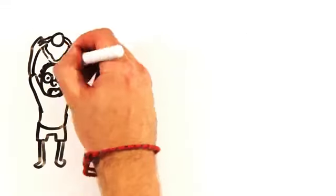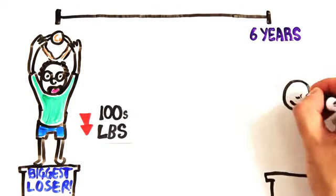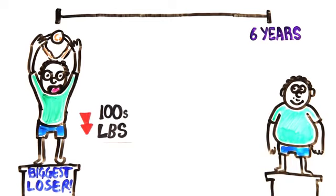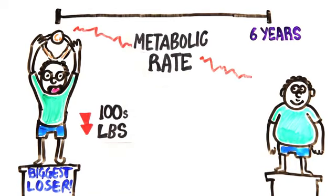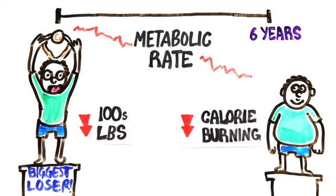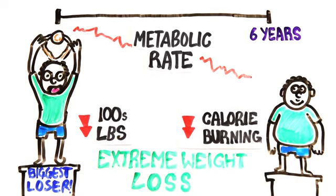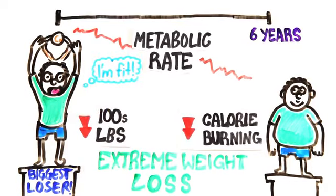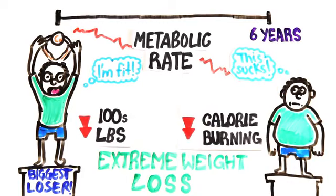After following contestants from the show The Biggest Loser for six years, some of which who had lost hundreds of pounds in those seven months, scientists noticed something interesting. Not only did most of the participants in the study regain their weight, but their metabolic rates changed. One man in particular now burns 800 fewer calories a day than would be expected for a man his size. This is six years after leaving the show, showing how extreme measures to lose weight, while they may be successful at the time, have long-lasting impacts on your metabolism, making it harder to keep off weight in the future.